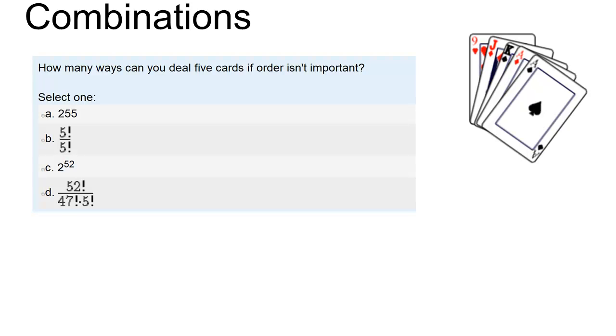So the question is, how many ways can you deal 5 cards from a 52 card deck if the order of those 5 cards isn't important?